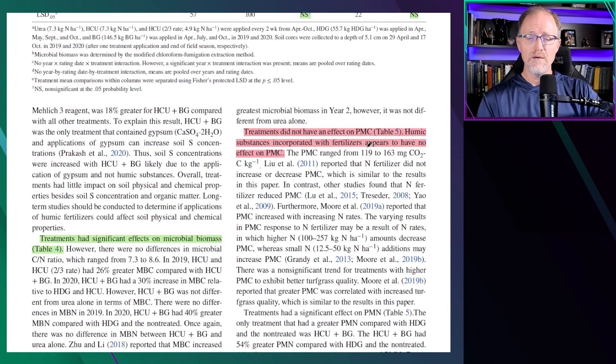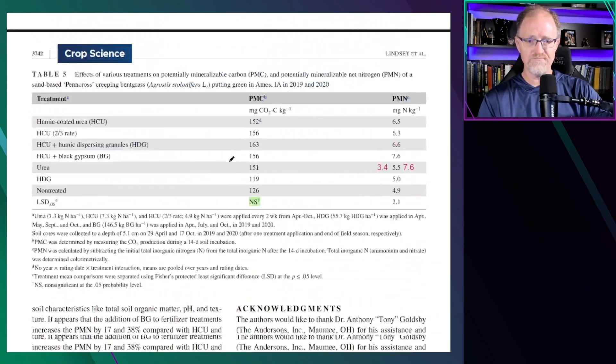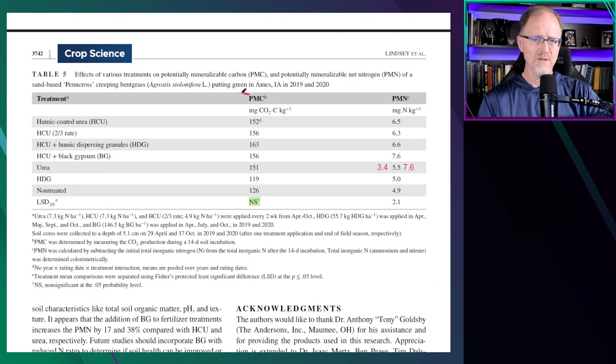Treatments did not have an effect on potential mineralizable carbon, and humic substances incorporated with fertilizers appear to have no effect on potential mineralizable carbon. There was no difference between any product and urea. When we look at potential mineralizable nitrogen, there was no difference between any of the humic-coated ureas and urea.